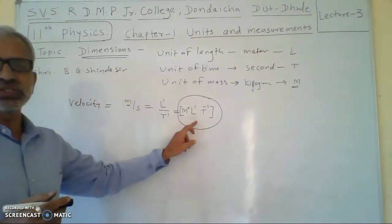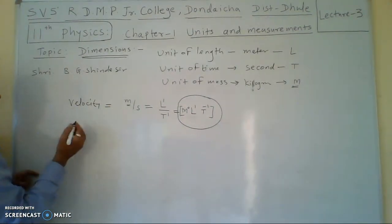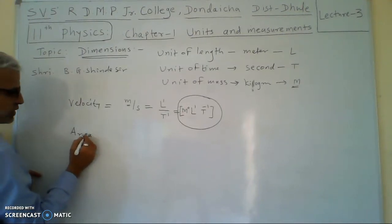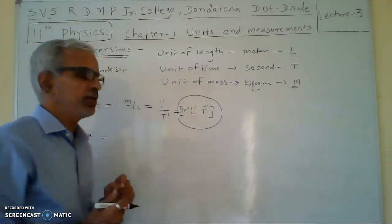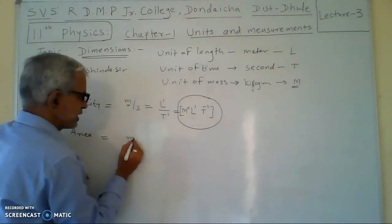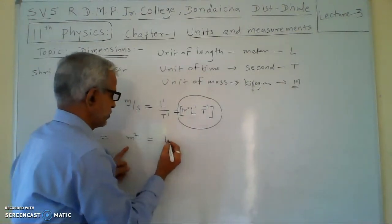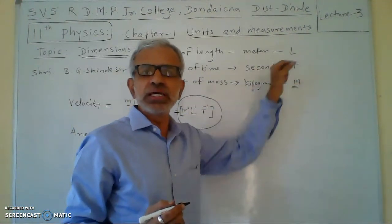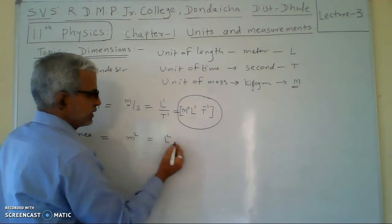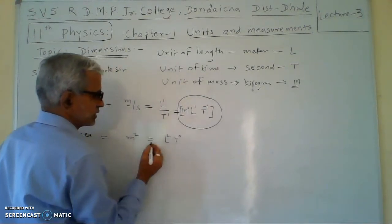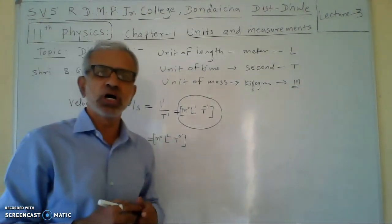This is the dimensional formula of velocity. Similarly, you can find dimensions of other quantities like area. The unit of area is meter square. Meter is denoted by L, so meter square gives L², and this is the dimension of area.